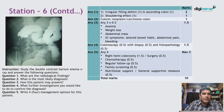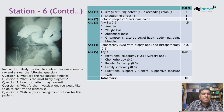Looking at this barium enema X-ray, there is an irregular filling defect in the ascending colon with a shouldering effect. The most likely diagnosis is colonic neoplasm or carcinoma of the colon. The patient may present with anemia, weight loss, abdominal mass, or GI symptoms like altered bowel habit, abdominal pain, or bleeding.